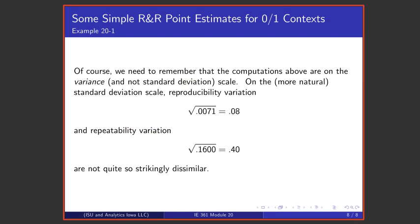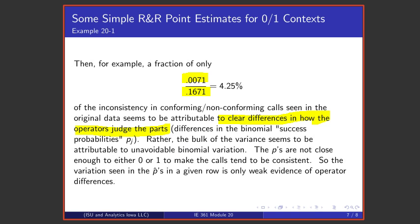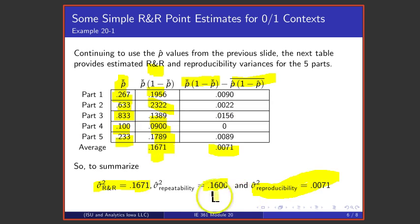Of course, if one does all of these calculations on a standard deviation scale instead of on a variance scale, one might think about comparing the square root of 0.0071 to the square root of 0.1600, and that makes those numbers not so strikingly dissimilar as this number and this number on the variance scale.